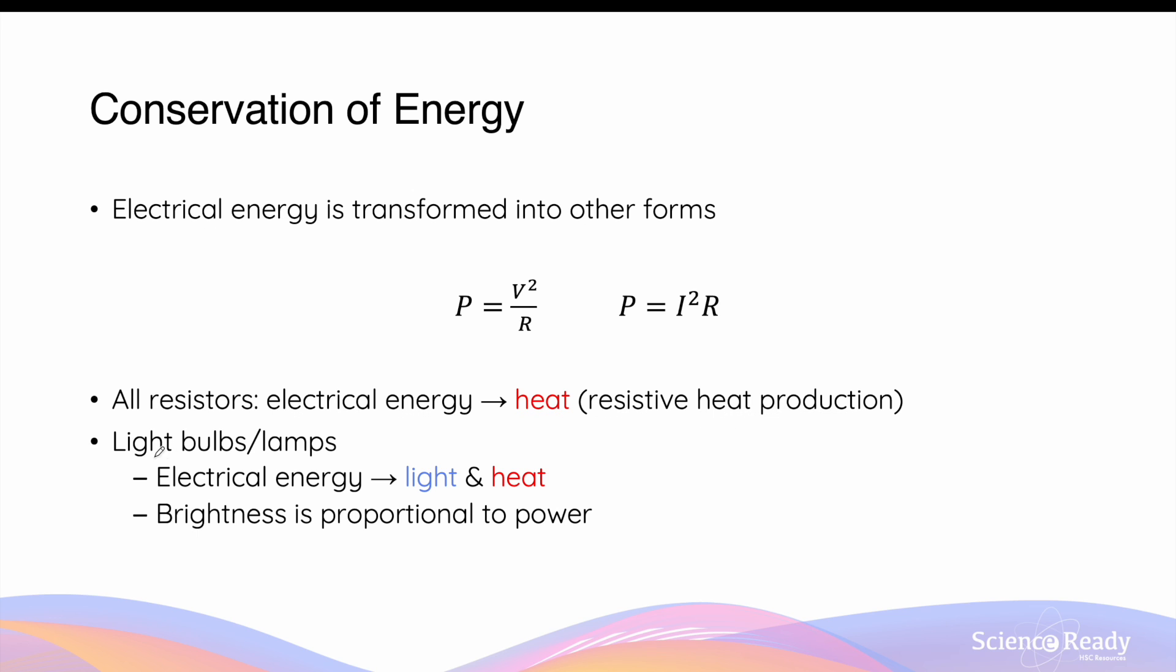When an electric circuit contains light bulbs and lamps, the electrical energy that passes through them is transformed into light energy as well as heat. And the latter is present because these light bulbs and lamps usually contain some amount of electrical resistance. What we'll talk about next is that the brightness or how much light these lamps or light bulbs will emit is proportional to the electrical power that passes through them.